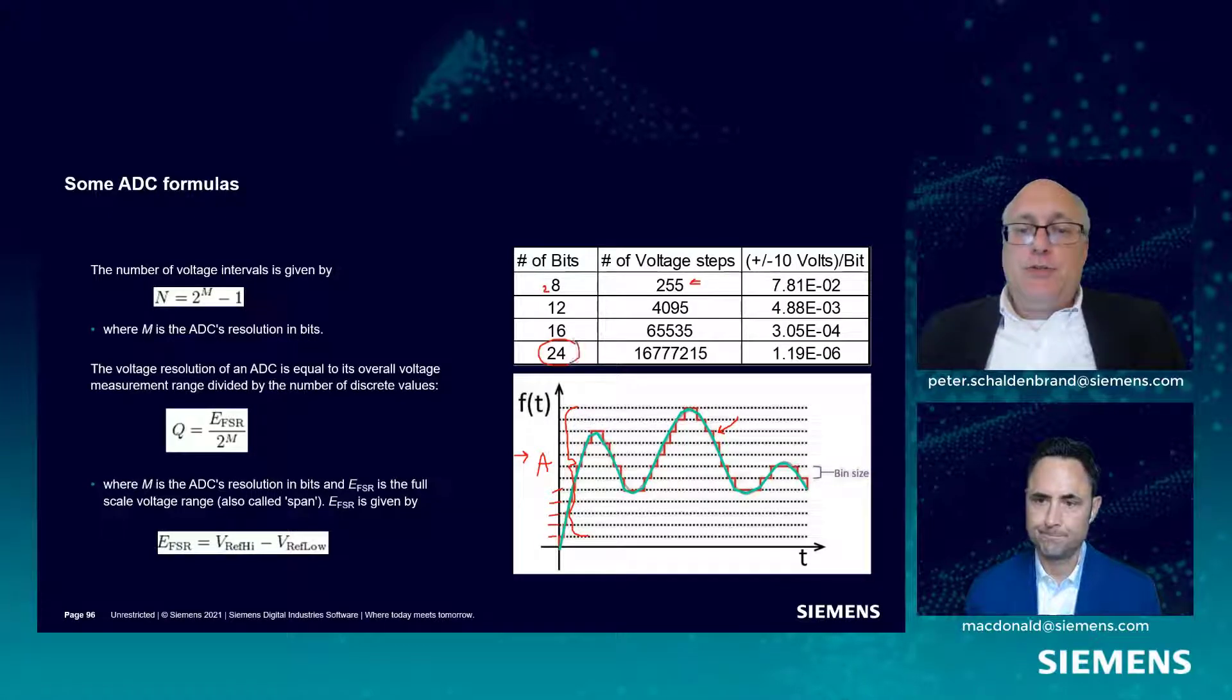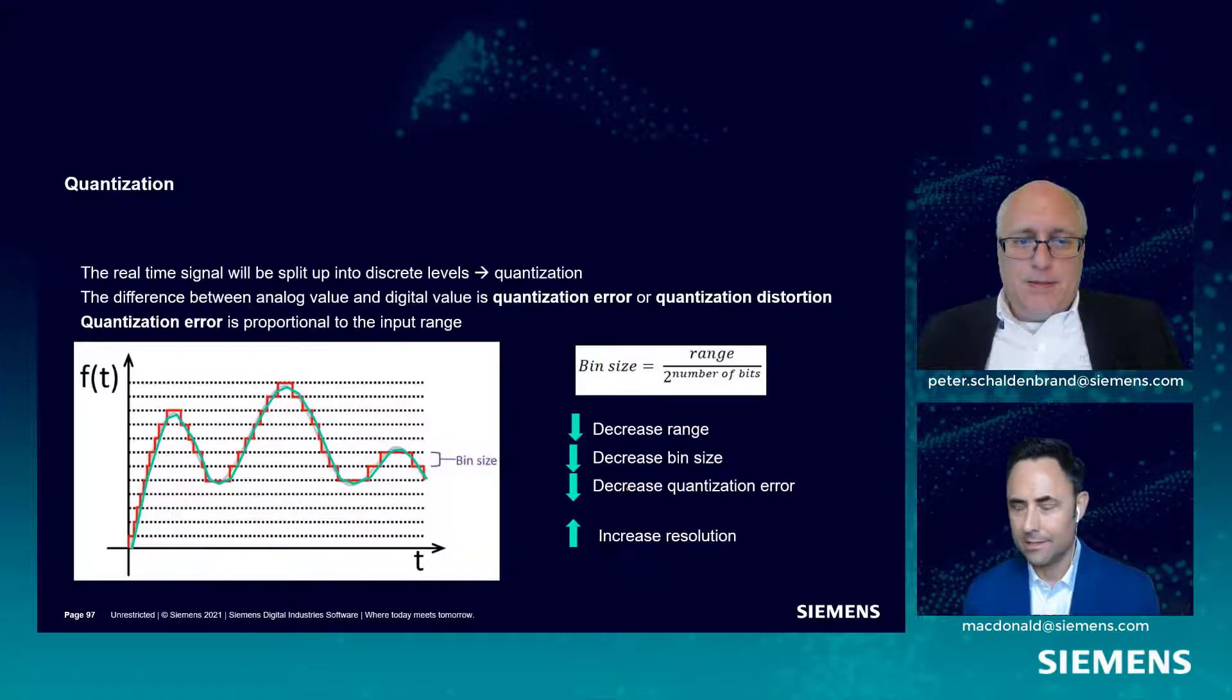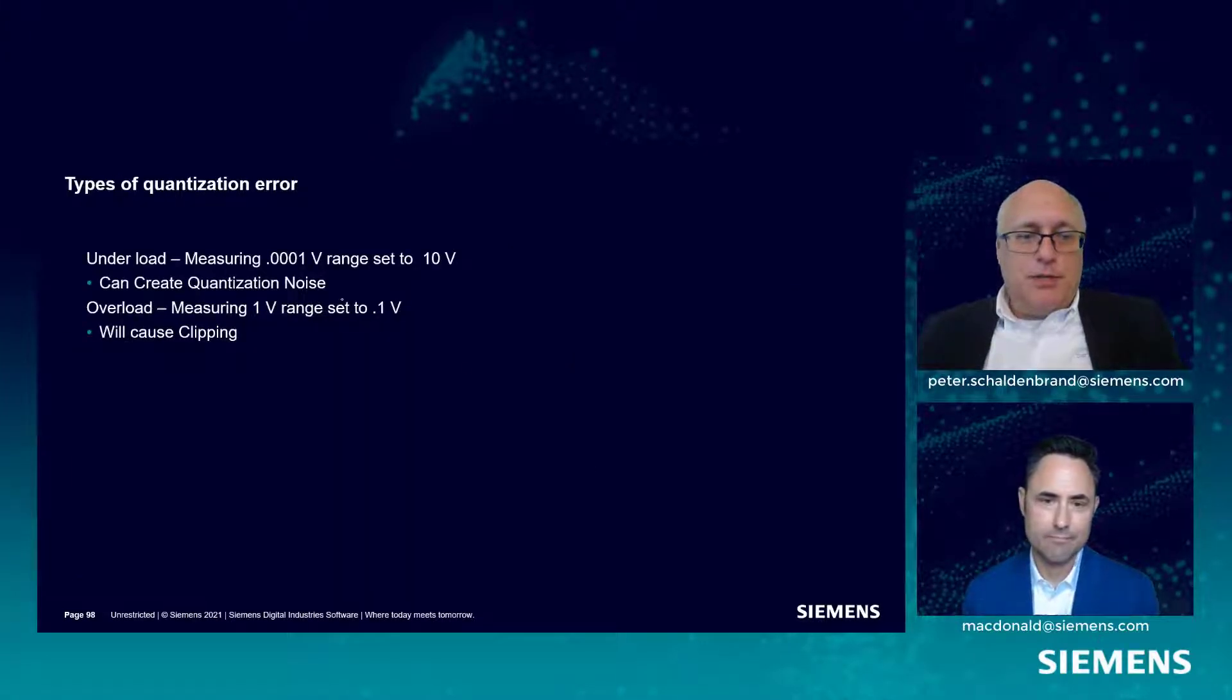A lot of modern analyzers use 2 to the 24th number of steps, 16 million. Why would they use so many? Just like the more pixels on your computer screen, the better a round element looks. The better it looks.